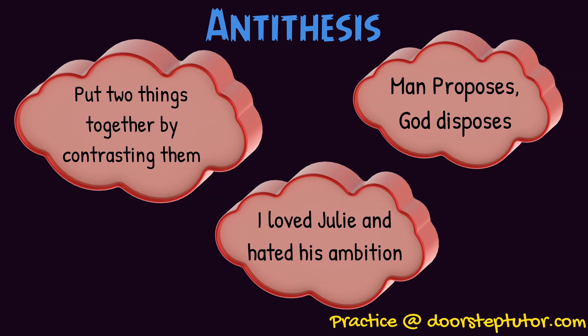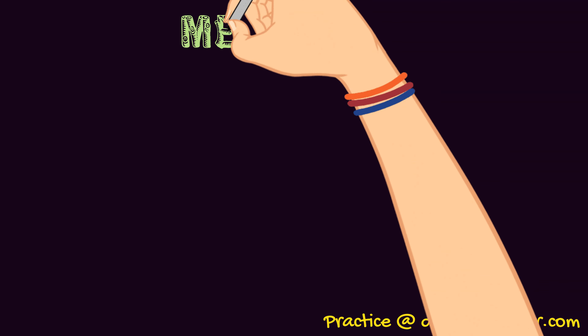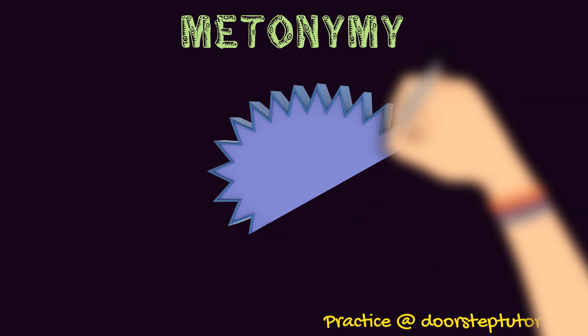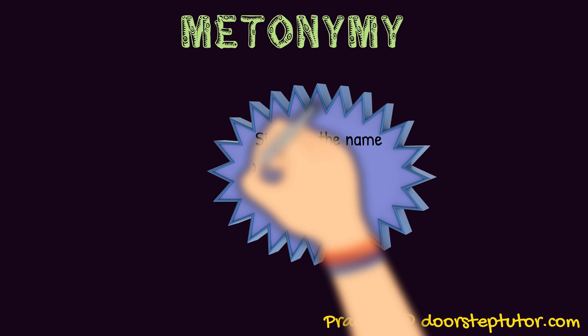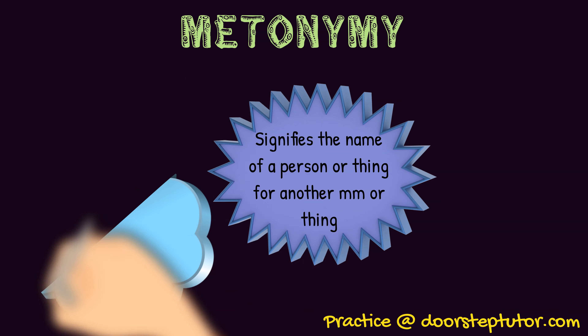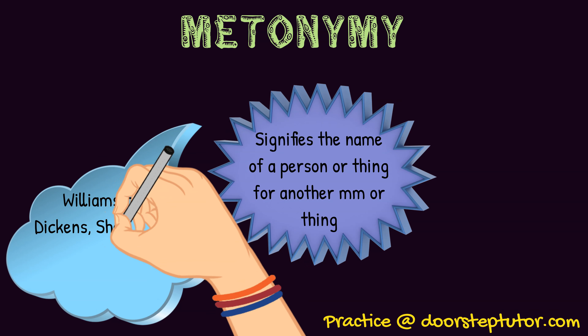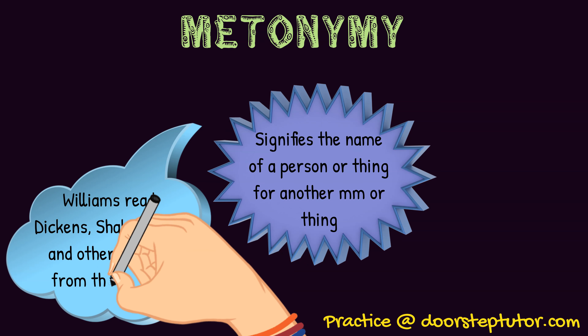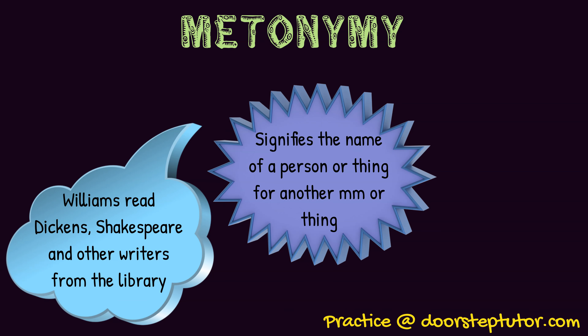Another important figure of speech is metonymy. It signifies the name of some person or thing used for another person or thing. For example, 'Williams reads Dickens, Shakespeare and other writers from his library.' Does he read Dickens? No, he reads about Dickens. That is what metonymy is — quite an interesting example.